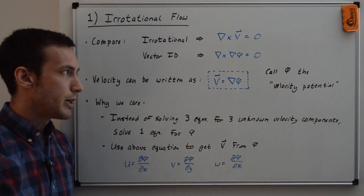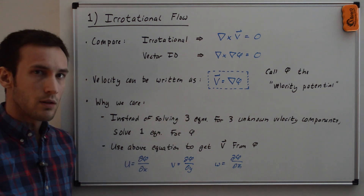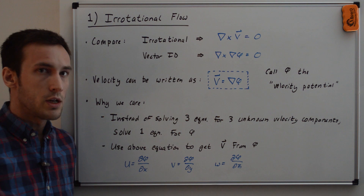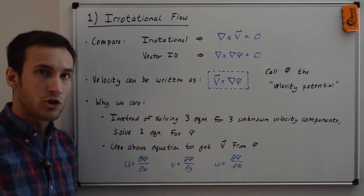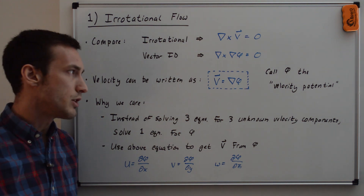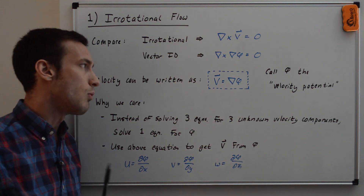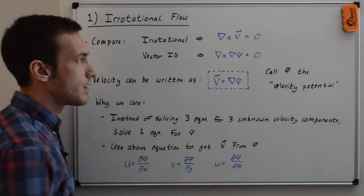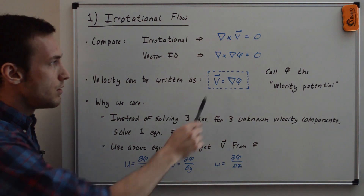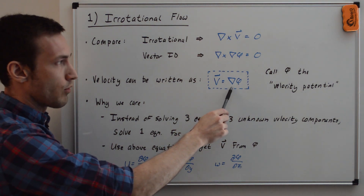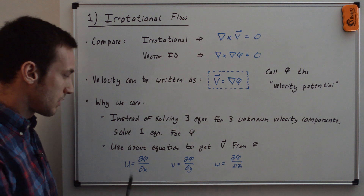Why is this so powerful? Instead of solving three equations for the three unknown components of velocity — the i-hat, j-hat, k-hat components, or x, y, z in Cartesian coordinates — we can now just solve one equation to find phi, the velocity potential, and then use this by taking the gradient of phi to get the three velocity components.